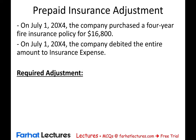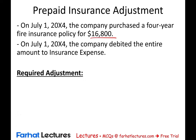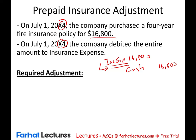On July 1st X4, the company purchased a four-year fire insurance policy for $16,800. The journal entry on that date credited cash $16,800 and debited insurance expense for the whole amount of $16,800. Now what's the problem? Debiting the whole expense would have been correct only if the expense had expired entirely in X4 — if the $16,800 had been fully used up in X4, there would be no problem.